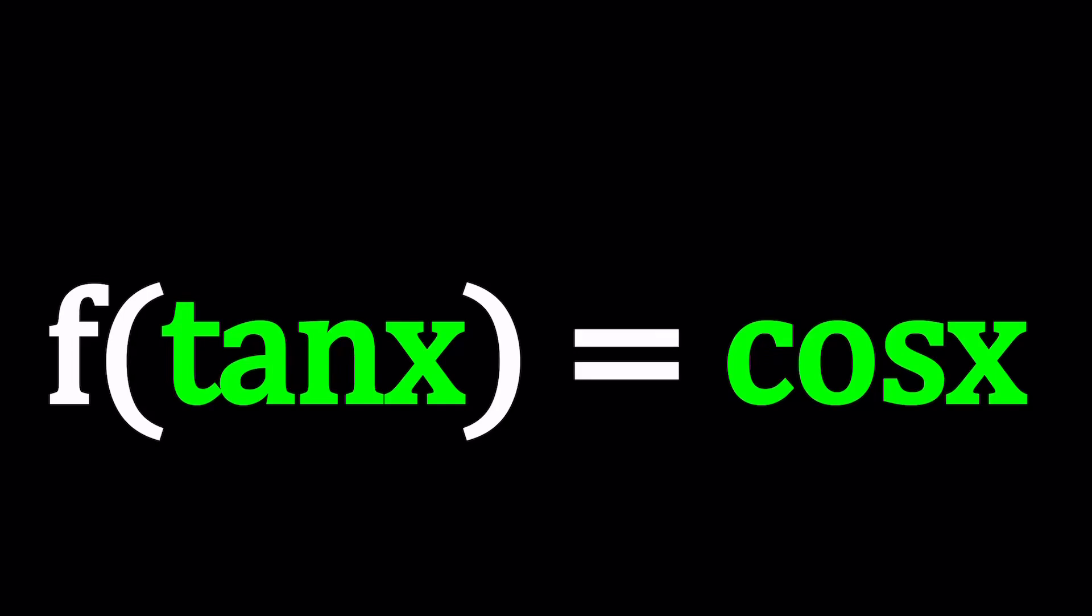Hello everyone, in this video we're going to be solving a functional equation with trigonometric functions. We have f of tangent x equals cosine x and we're going to try to find an expression for f. In other words, we're looking for f of x in terms of x.